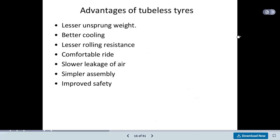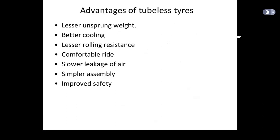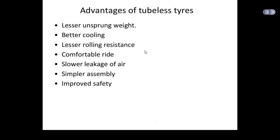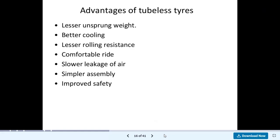A large number of advantages are available in tubeless tyres: lesser unsprung weight — this is the main characteristic. Better cooling rate is available because in regular tube-type tyres, friction is higher, generating more heat. In tubeless tyres, friction is less, so the cooling rate is high. Lesser rolling resistance is another feature. Comfortable riding is available. Slower leakage of air — if the vehicle gets punctured, it is still possible to move some distance. Simpler assembly is available. Improved safety.